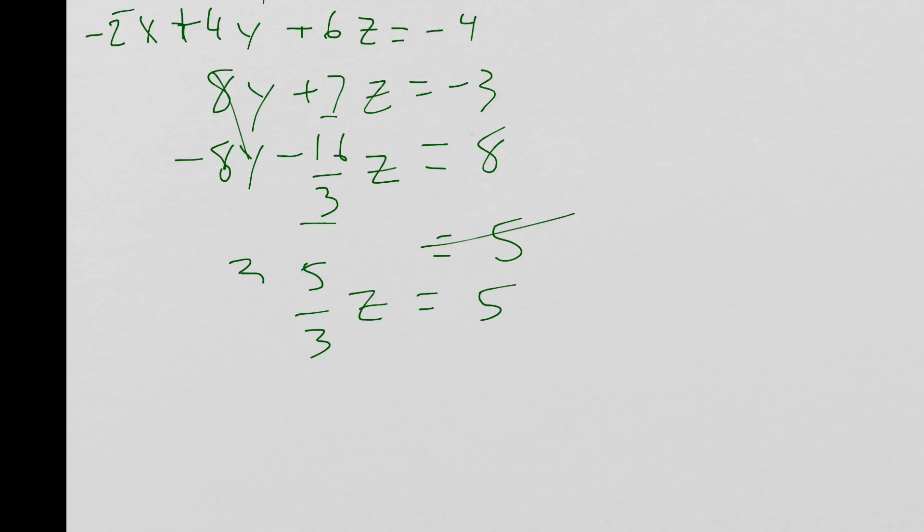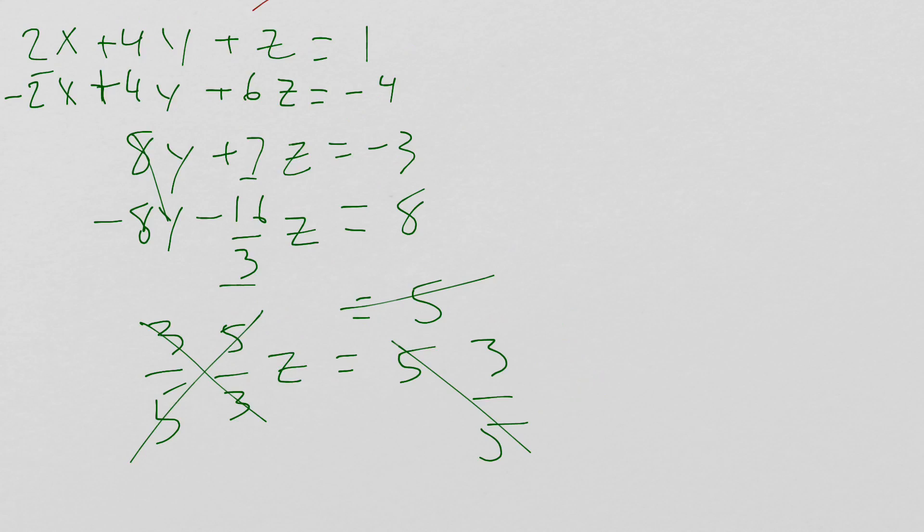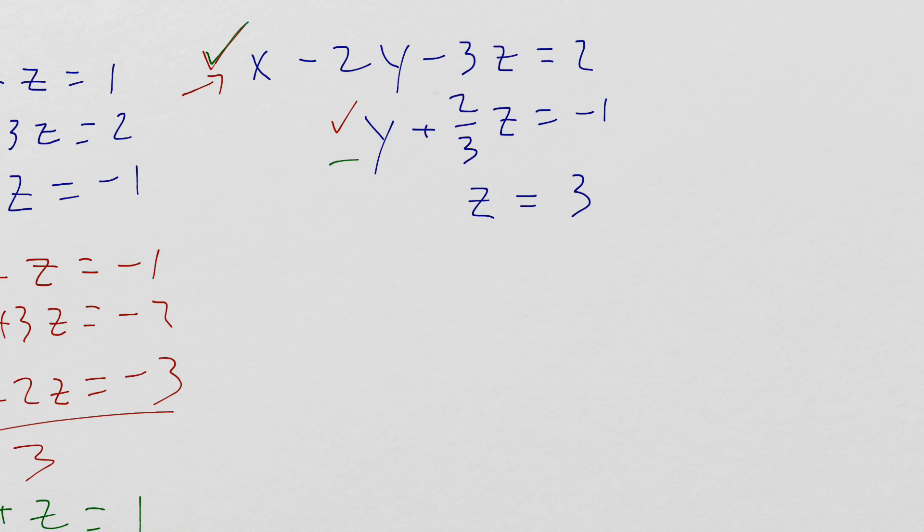To solve this, I'm going to multiply both sides by 3 fifths. 5's cancel, multiply the other side by 3 fifths. The 5's cancel, I get z equal to 3.